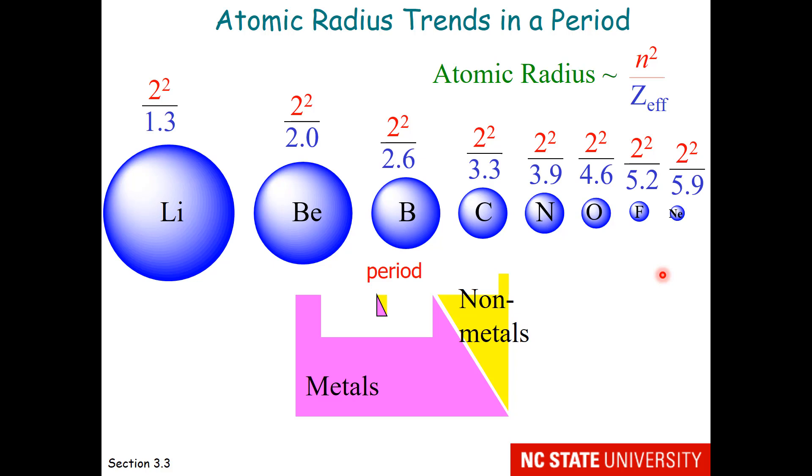Now this is sort of counterintuitive. You might think, well, I'm adding protons and electrons. Shouldn't the atom be getting larger as I go from left to right? Well, don't forget that tractor beam, which tends to draw in the electrons and make the atomic radius smaller.